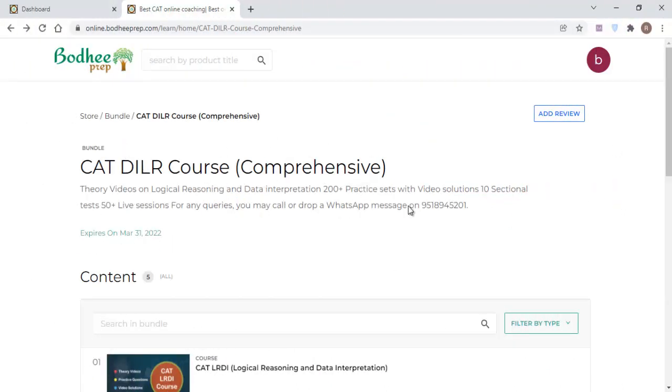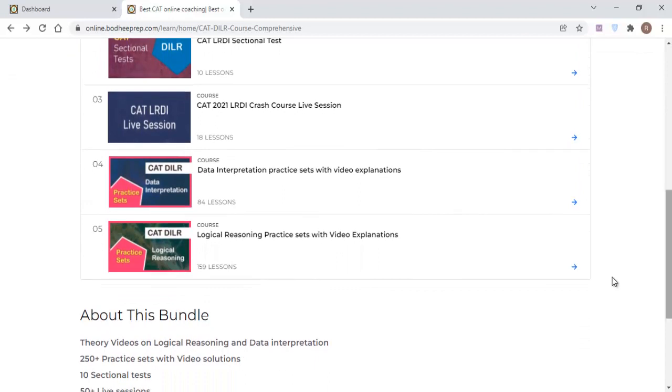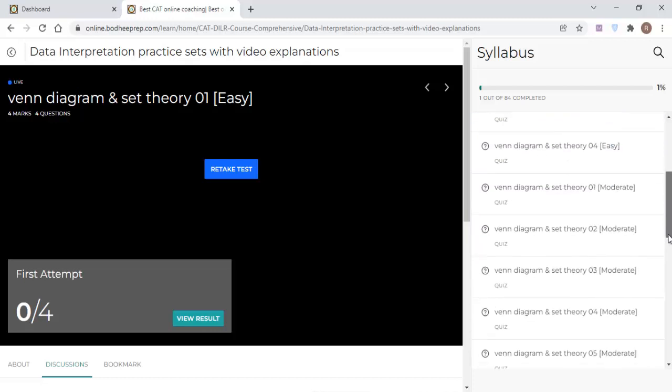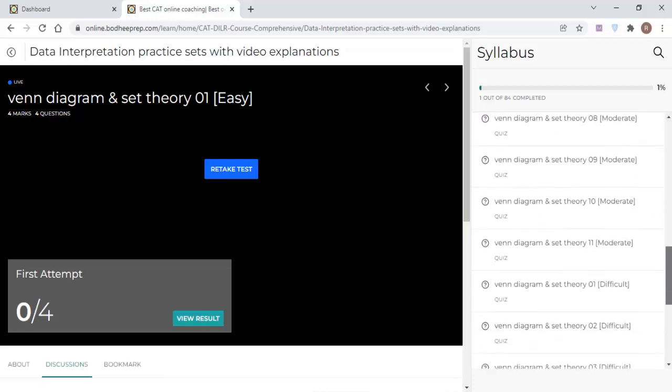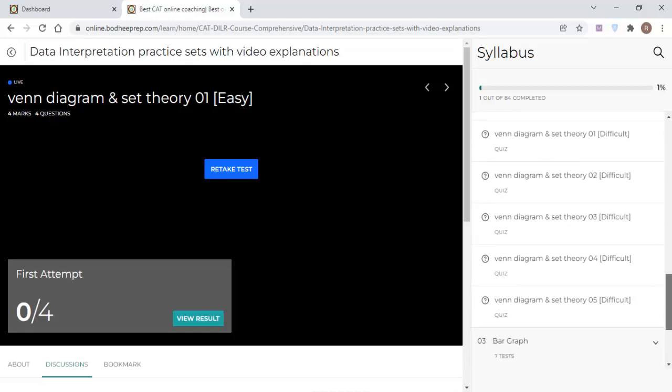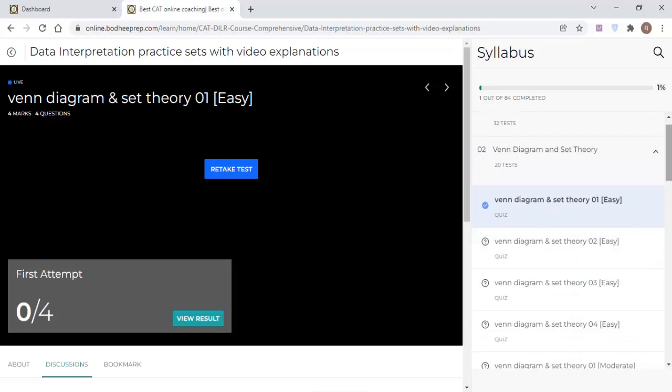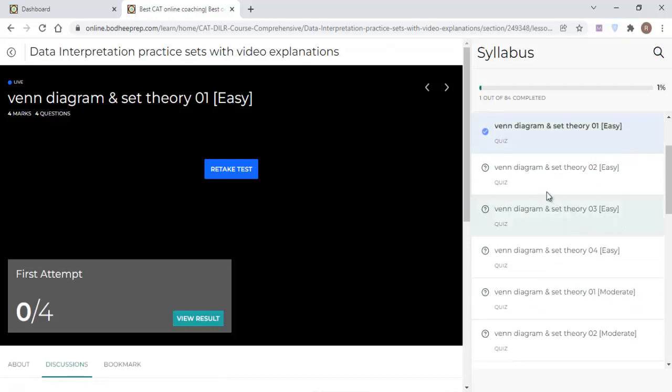Let me show you where you'll be finding these sets. If you've purchased only the CAT DILR comprehensive course, you'll find it in this particular bundle, and if you purchased the complete course, you'll find it in that bundle. This particular topic comes in the data interpretation section, so you have to go to this folder. Once you go into it, you'll be finding the second part - you can see that Venn diagram and set theory. I've given 20 sets - there are five difficult sets and the rest are easy to moderate. You have to solve all the easy and moderate sets.